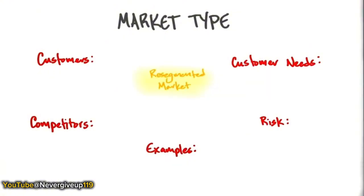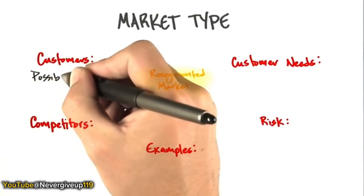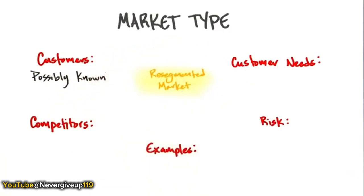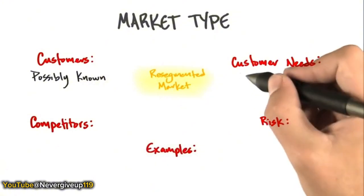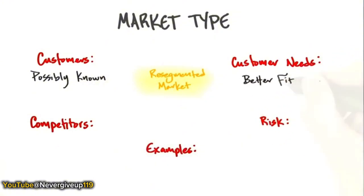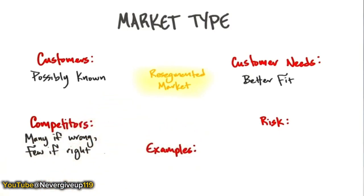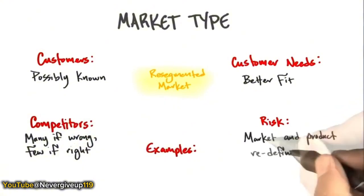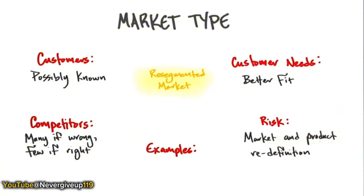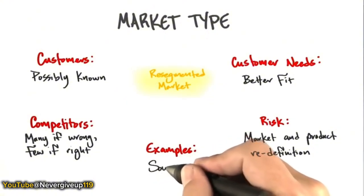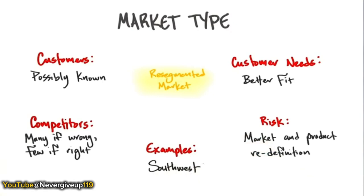In a resegmented market, you have a hypothesis about who the customers are — you think you understand your fit, either via low cost or specific niche needs, and you might have a better fit for them. There are many competitors if you're wrong, but very few if you're right. Your risk is getting the market and product redefinition wrong — not doing enough customer discovery. A great example is what Southwest did: they took on the airline industry by breaking up the traditional hub-and-spoke model and providing limited services at an extremely low price.